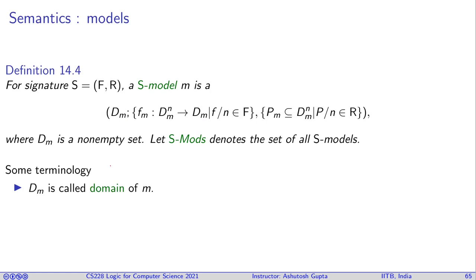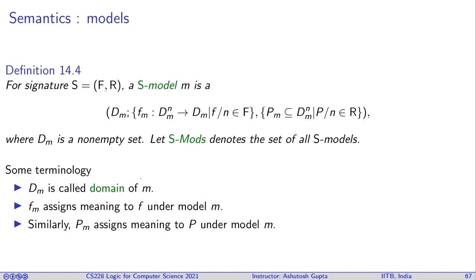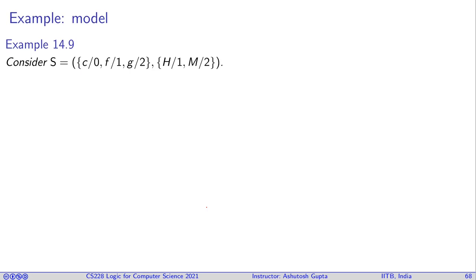Some terminology: d_m is called the domain of the model. f_m assigns meaning to f under the model m, and p_m assigns meaning to p under the model m.